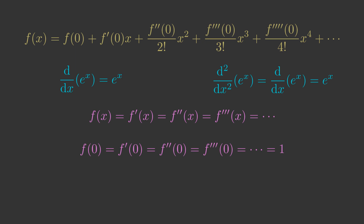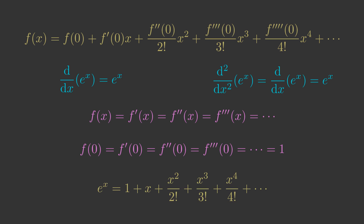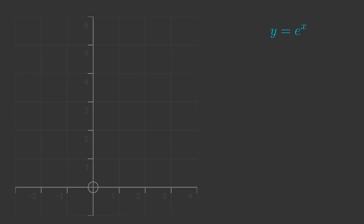If we take the original equation and replace f of 0 and all its derivatives with 1, we get the Maclaurin series for e to the x. Here is a graph of e to the x. We will plot the Maclaurin series of e to the x, adding the terms one by one, to see how the series gradually moves closer and closer to the complete function.